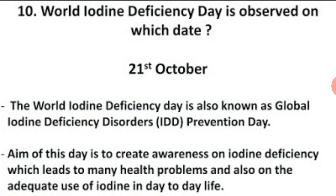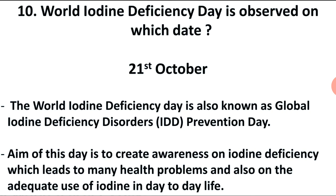Last question: World Iodine Deficiency Day is observed on which date? Answer: 21st of October. This is also known as Global Iodine Deficiency Disorders Prevention Day. Iodine is an important element for the human body, and this day highlights the importance of iodine. Thank you. Jai Hind.